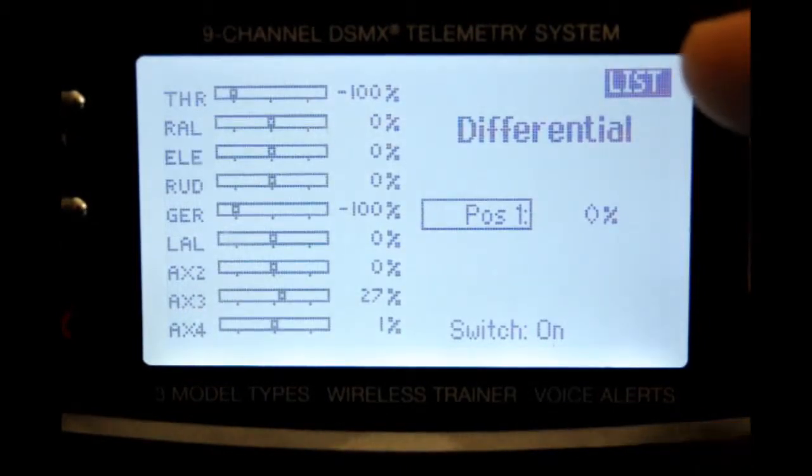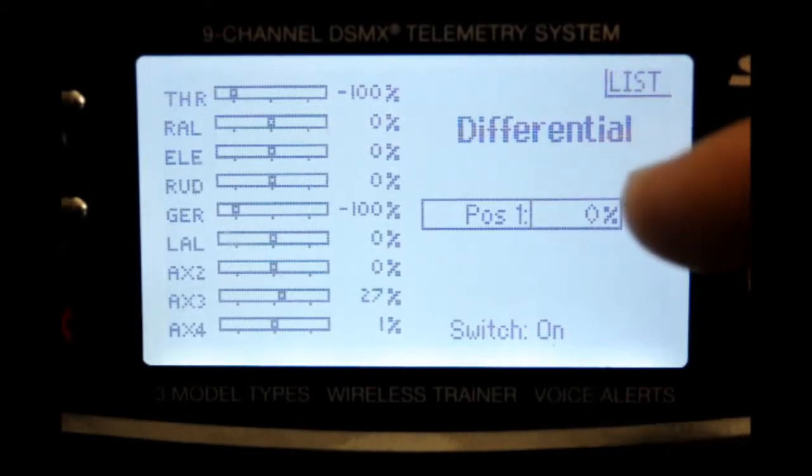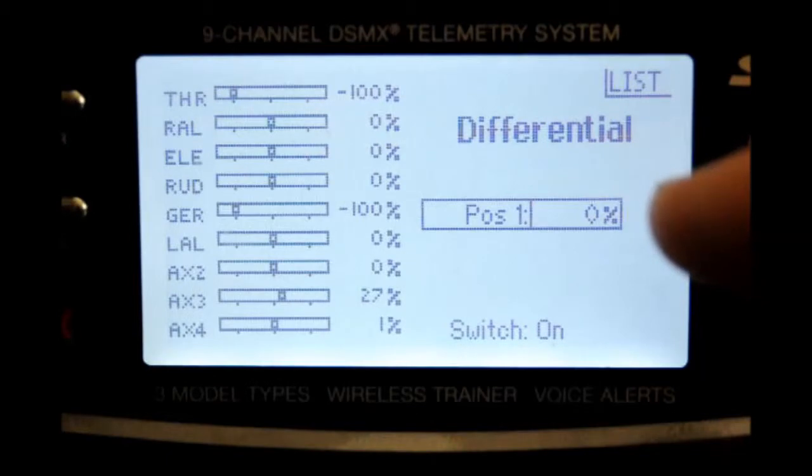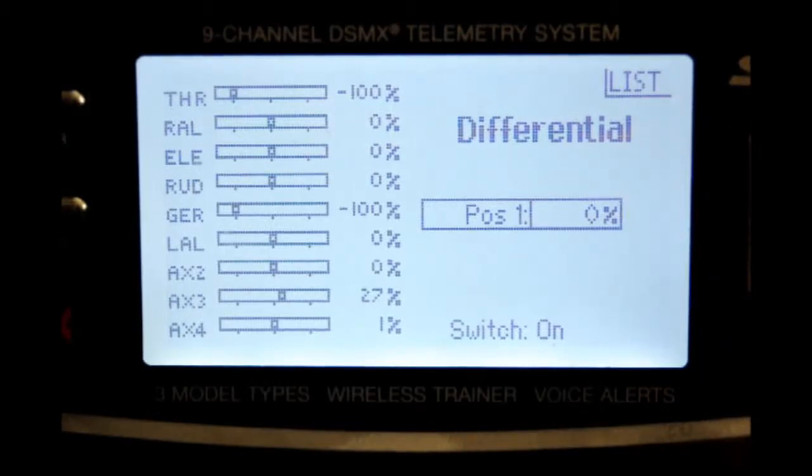Your cursor is here up on list. Let's move it on down to position and there you see it's highlighted the number box out there. We're going to go ahead and change that by first depressing on the scroll switch once. It's now active. We can change that value from zero. We're going to go to 50.